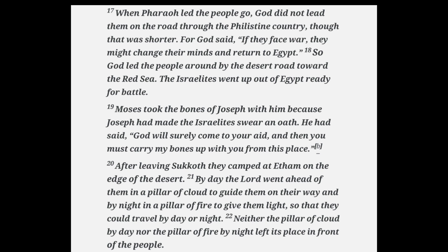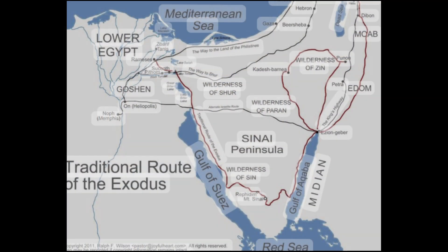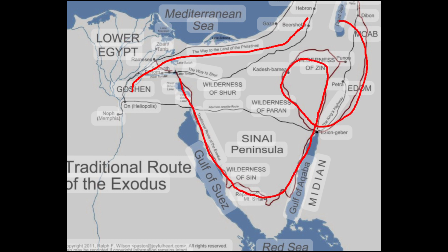After leaving Succoth they camped at Etham on the edge of the desert. By day the Lord went ahead of them in a pillar of cloud to guide them on the way, and by night in a pillar of fire to give them light, so that they could travel by day or night. Neither the pillar of cloud by day nor the pillar of fire by night left its place in front of the people. The Israelites were to avoid the area where the Philistines lived — the Lord did not want them discouraged by the Egyptian garrison lining the shortest route to Canaan, so he sent them around by the wilderness of the Red Sea to the south.